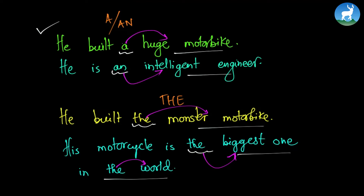The grammar idea is that articles are followed by a noun phrase. So 'huge motorbike' is a noun phrase — I'm writing NP for that. 'Intelligent engineer' is a noun phrase. 'Monster motorbike' is also a noun phrase, while 'the biggest one in the world' is longer but is also a noun phrase. A noun phrase is a combination of words — a group of words that act like a noun. For example, 'huge motorbike' has an adjective and a noun, and together they act as a noun.